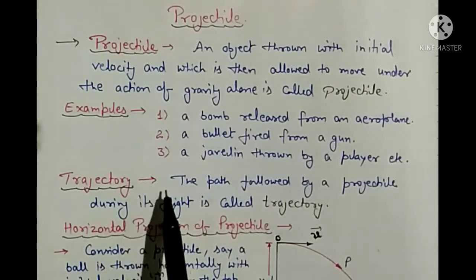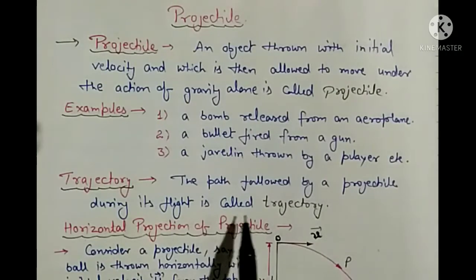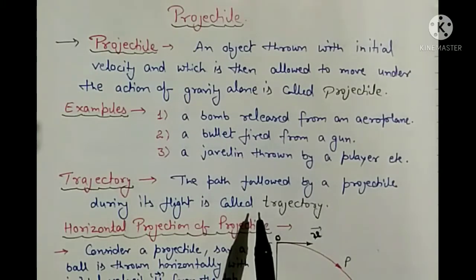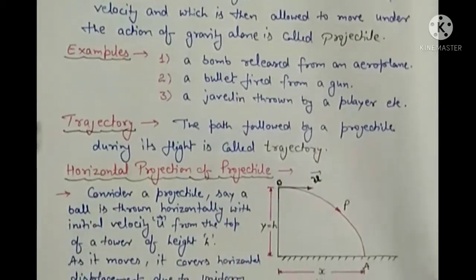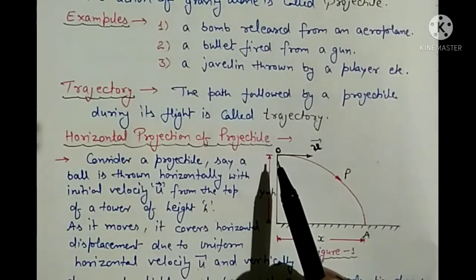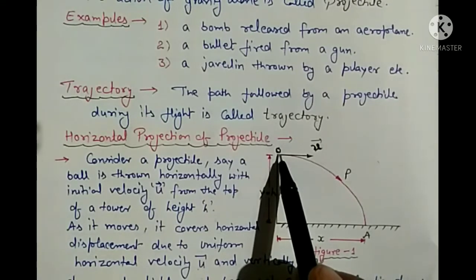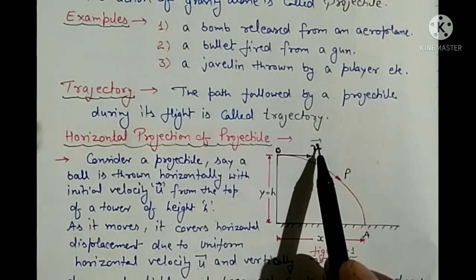Next one is trajectory. The path followed by the projectile during its flight is called trajectory. Trajectory kya hota hai — jab hum kisi projectile ko fire karte hain to jo path follow karta hai usko trajectory bolte hain. In the diagram, we have a tower here and there is a person standing here, and a stone is thrown in the horizontal direction with some initial velocity.